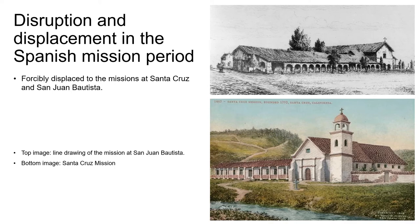In California, traditional stewardship of natural and cultural resources was brutally disrupted by the establishment of the Spanish missions beginning in the late 18th century. Ancestors of the Amamutsun were forcibly displaced from their lands by Spanish colonial invaders and held in the missions at San Juan Bautista and Santa Cruz, where they were forced to provide free labor and convert to Catholicism.